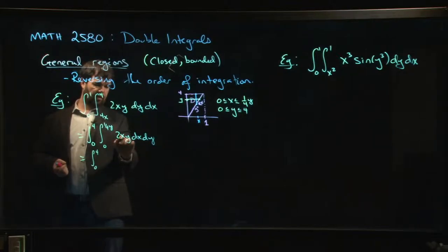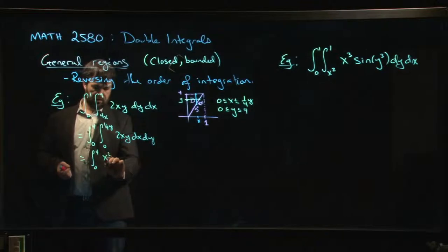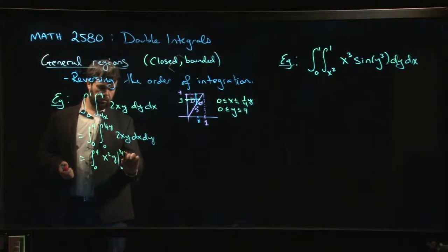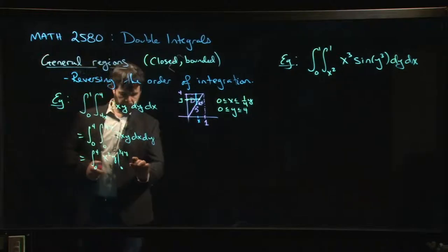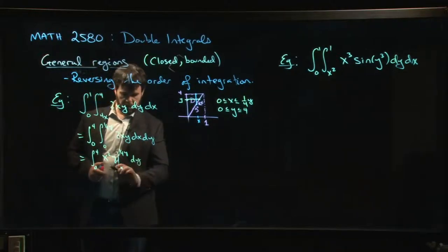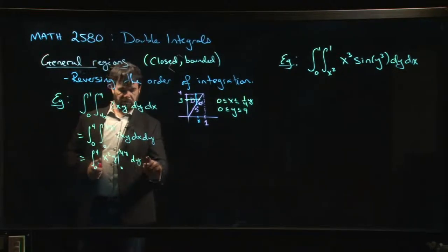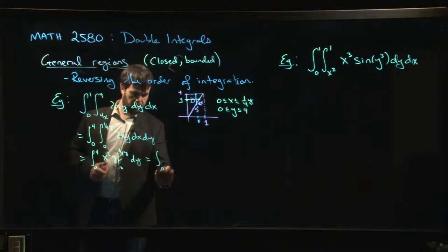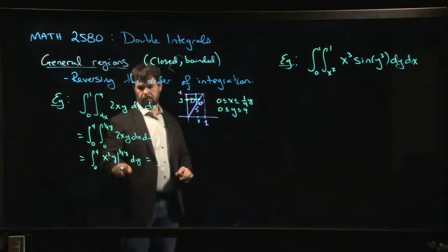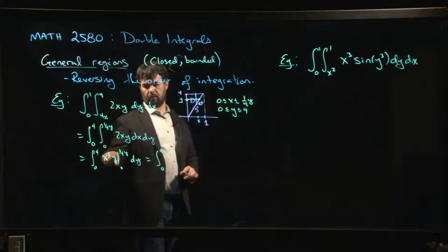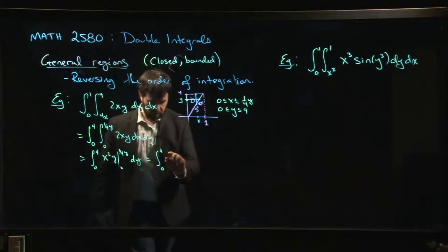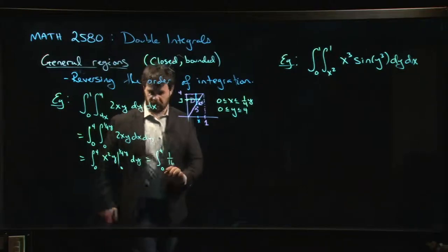So zero to four, the antiderivative of 2x is x². x² times y going from x equals zero to x equals one quarter y. Be careful that you're plugging those in for the right variable. So the lower limit gives me nothing.